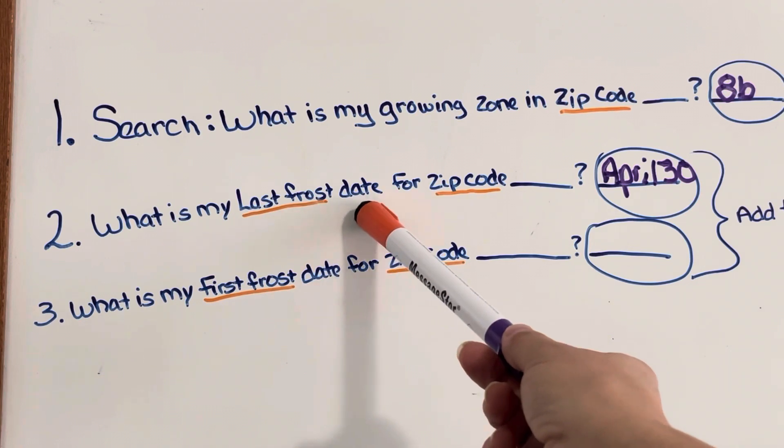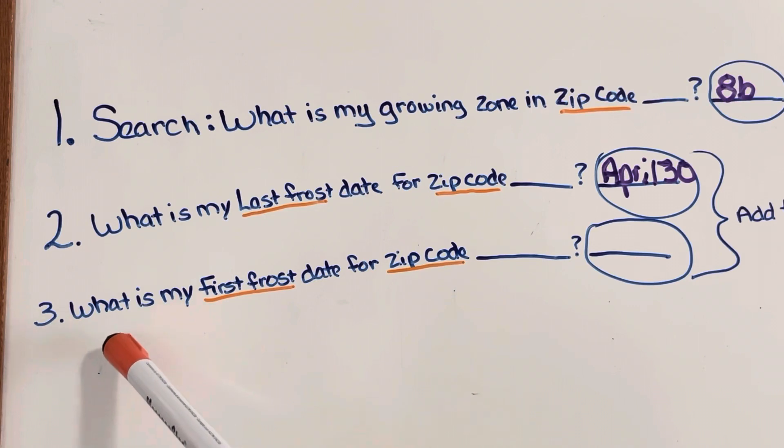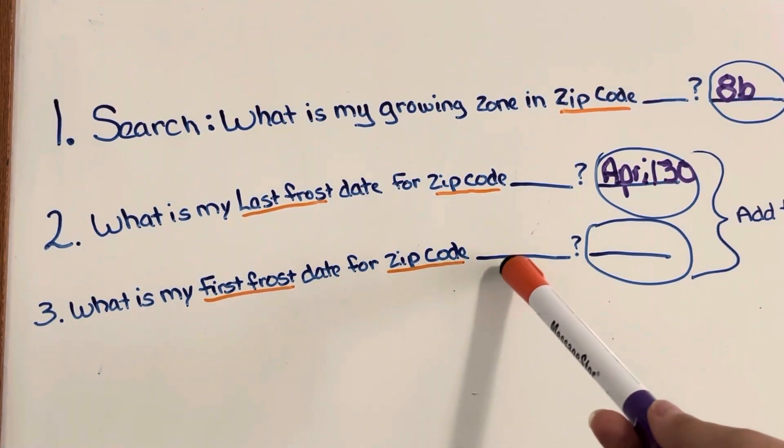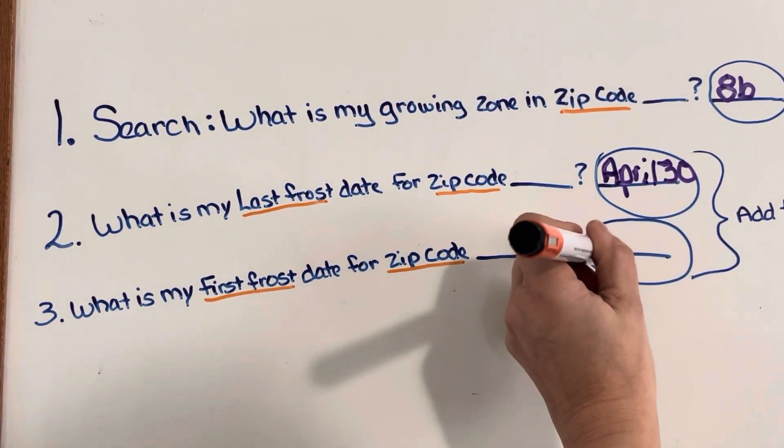And then next, number three, you're gonna write down or look up sorry, what is my first frost date for your zip code that you're planting in. Mine is November 1st. These aren't gonna necessarily be the same for you, write down that date as well.